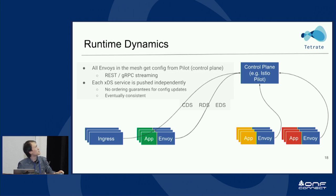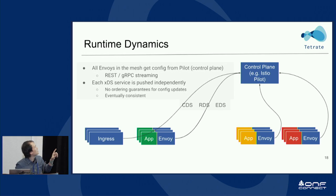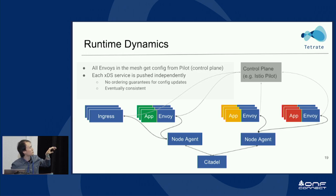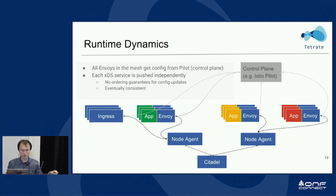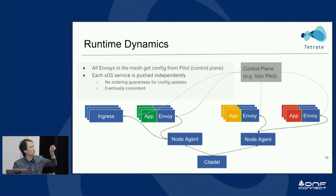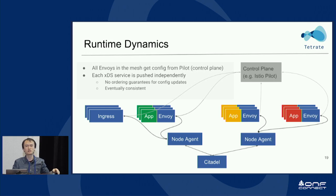In runtime dynamics, this is the SDS model. We have CDS, RDS, EDS, and SDS. With the node agent and Citadel, Pilot will issue the topology of the service to Envoy and then send links to the SDS resources. Envoy will then query the node agent to get the identity from Citadel. This is an eventually consistent model — when Envoy gets listener information from Pilot, it will wait until it has enough information from the node agent before it starts serving that listener.